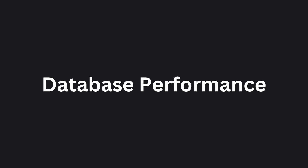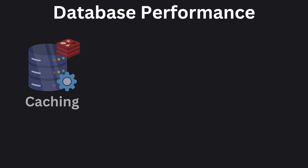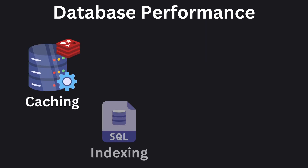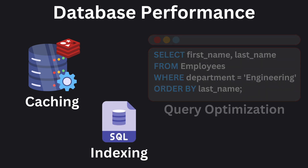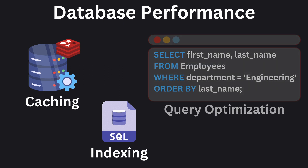Scaling your database is one thing, but you also want to access it faster. Let's talk about different performance techniques. The most obvious one is caching — database caching can be done through in-memory databases like Redis, which you can use to cache frequent queries and boost performance. The next technique is indexing: creating an index for frequently accessed columns will significantly speed up retrieval times. You can also consider query optimization for fast data access, including minimizing joins and using tools like SQL Query Analyzer or Explain Plan to understand your query's performance.